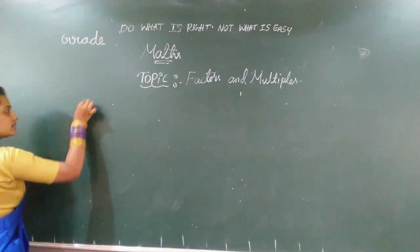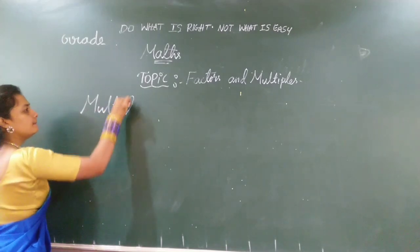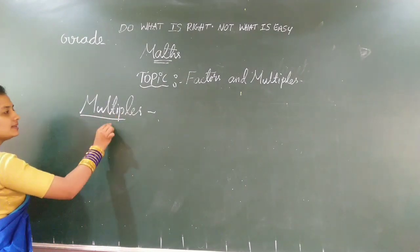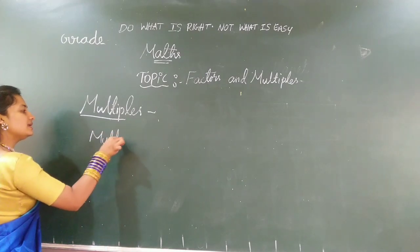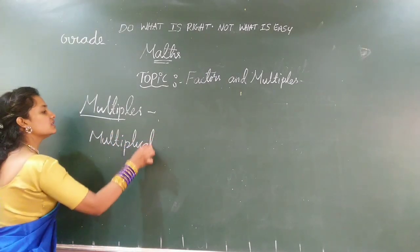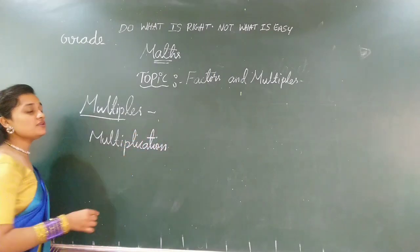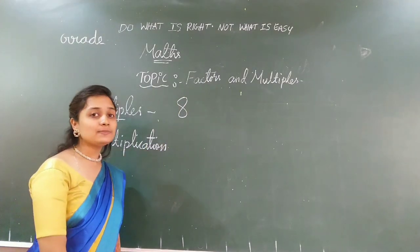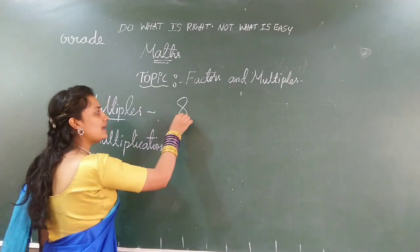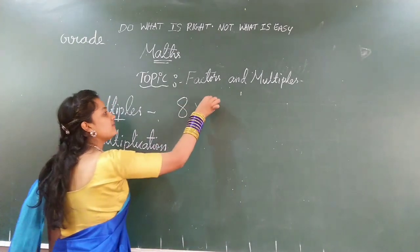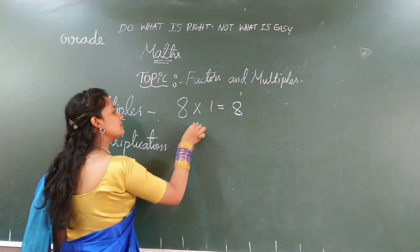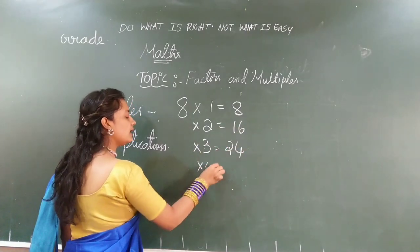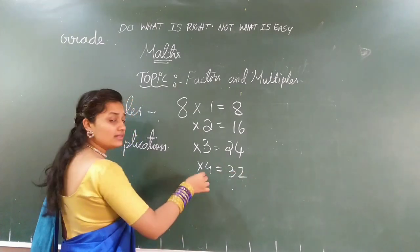First, we are going to talk about Multiples. In the word itself, you can see that Multiples means Multiplication. So, if I take any number, example 8, and I ask you to find the Multiples of 8, then you should multiply 8 with different numbers. Like, if I multiply with 1, I get 8. If I multiply with 2, I get 16. Multiplication with 3, I get 24. With 4, I get 32, and so on.